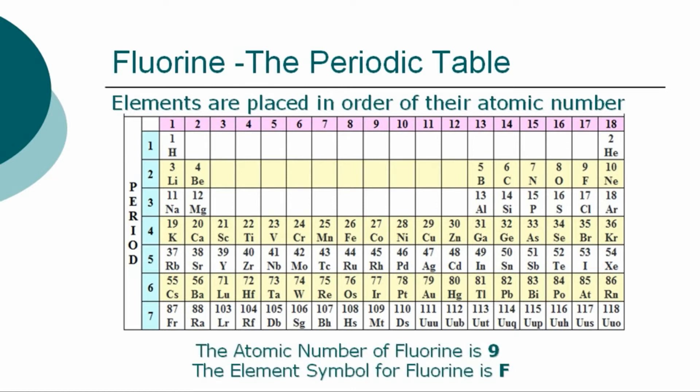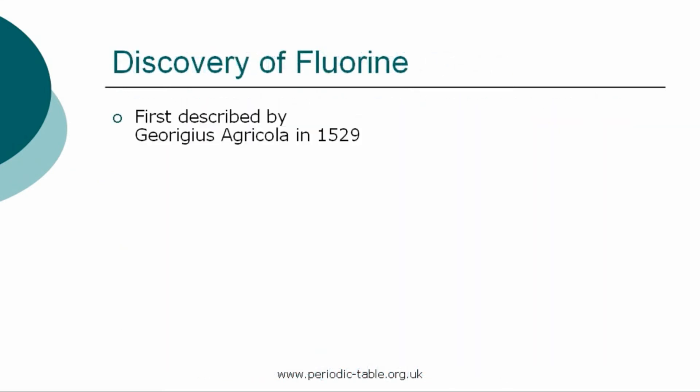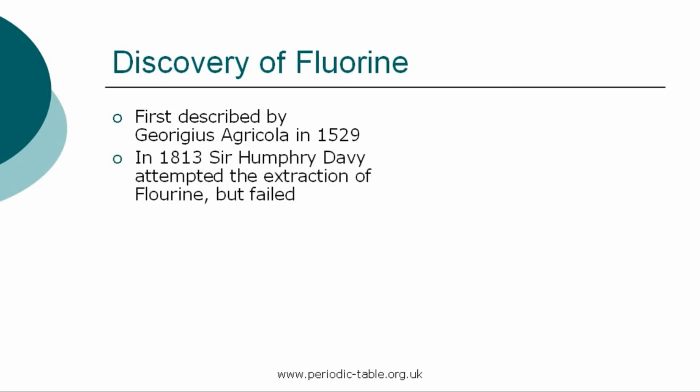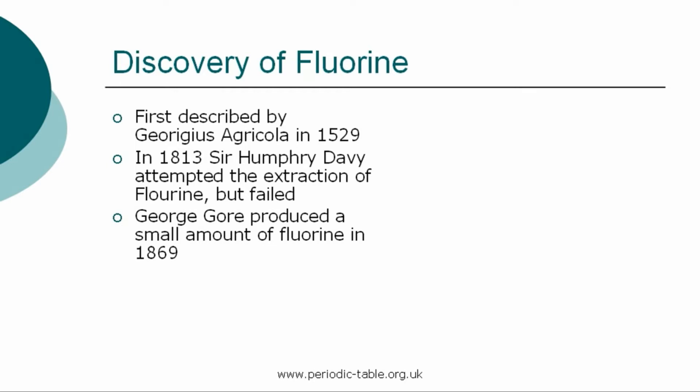The atomic number of fluorine is 9 and the element symbol is F. It was first described in 1529 by Georgius Agricola for its use as a flux. In 1813, Sir Humphrey Davy experimented with fluorspar and attempted the extraction of fluorine, but failed. George Gore was able to produce a small amount of fluorine through an electrolytic process in 1869.